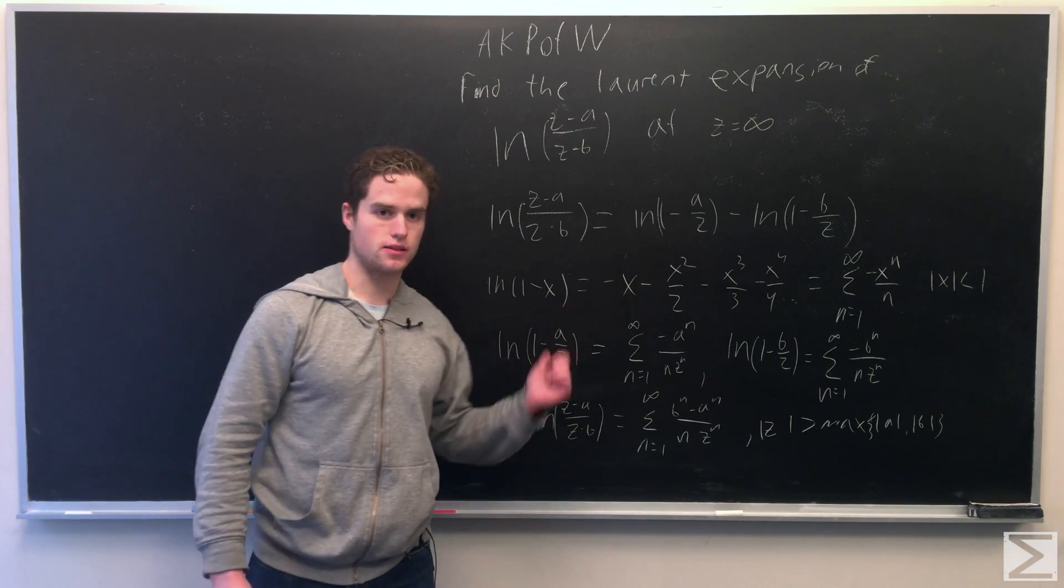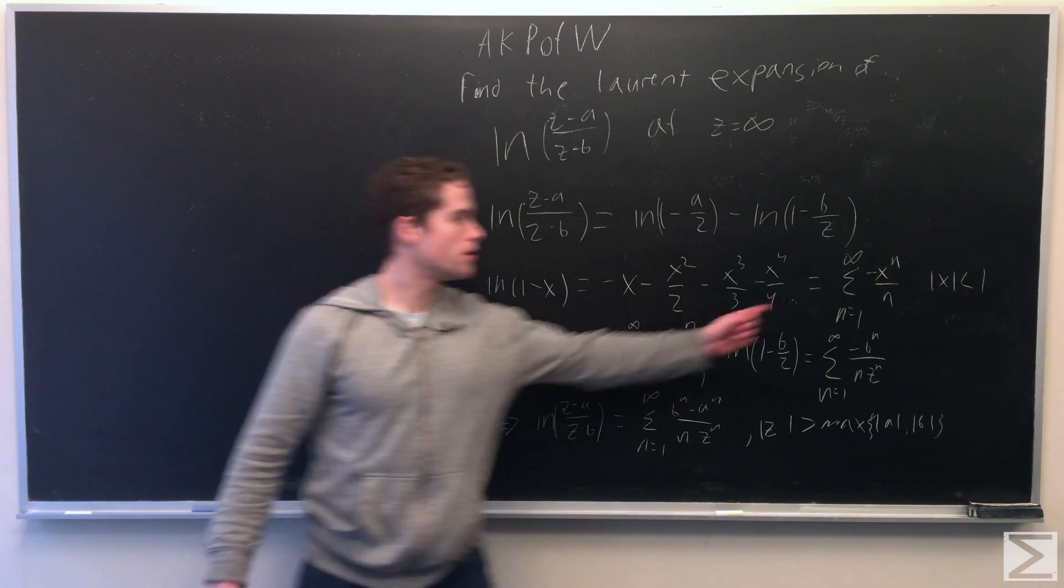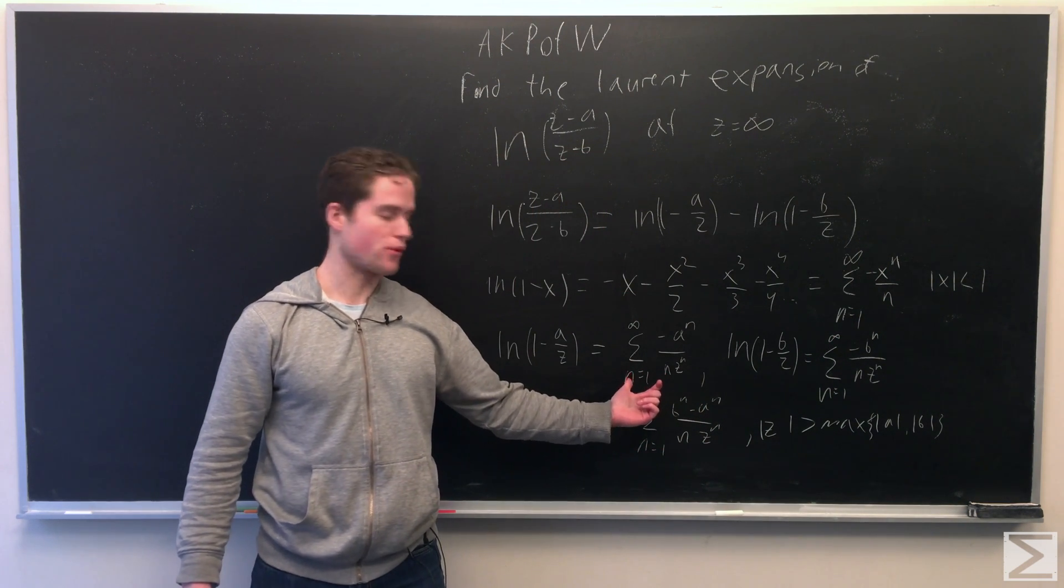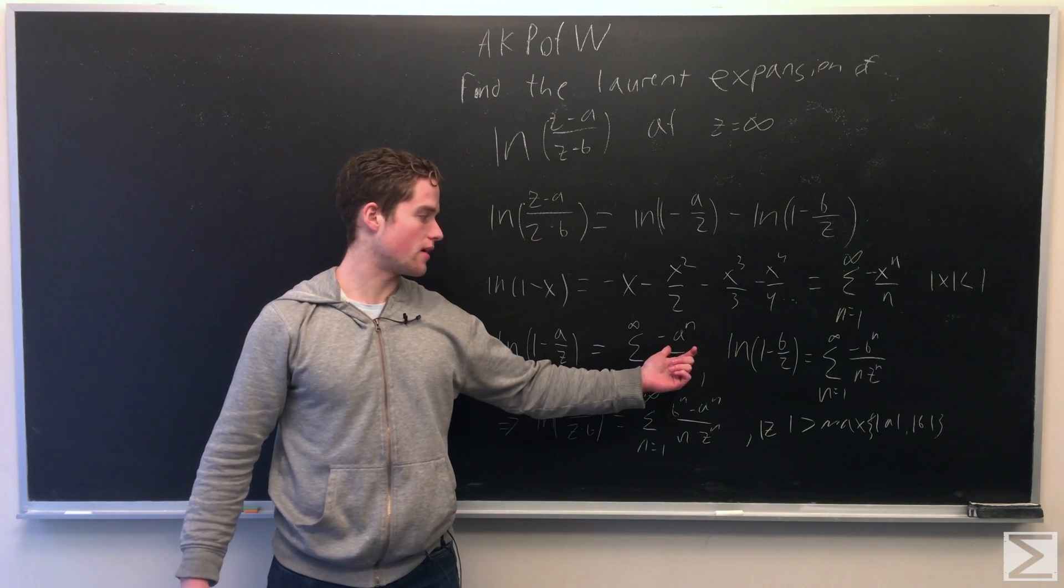So plug in for x, say a over z, we can plug that in there. We instead get a sum from n equals 1 to infinity of negative a to the n over n z to the n.